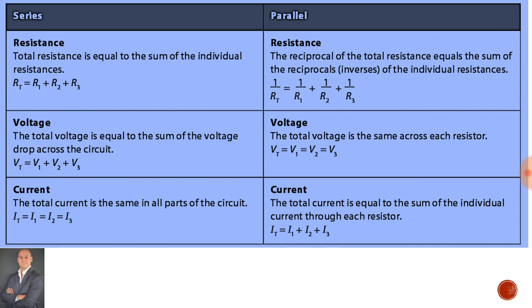For current: in a series circuit, the total current is the same in all parts of the circuit. In a parallel circuit, the total current is equal to the sum of the individual currents through each resistor.